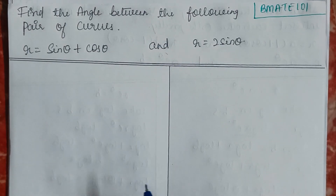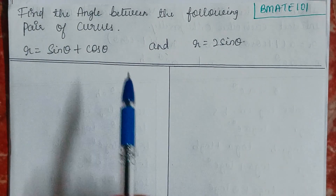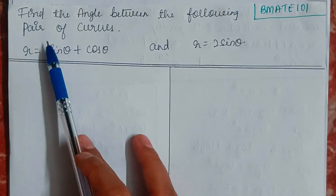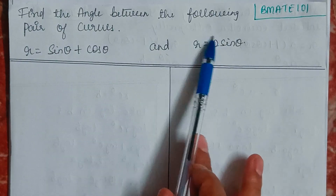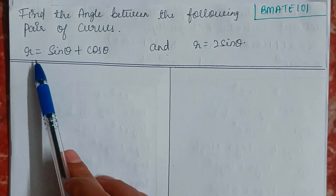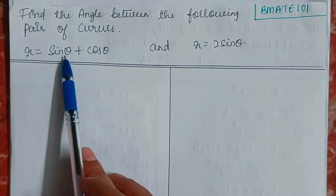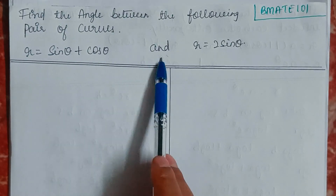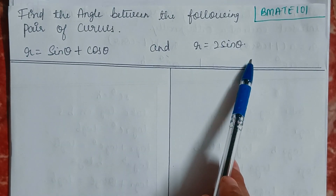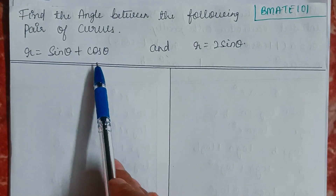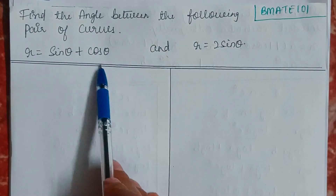Hello everyone, welcome back to my YouTube channel 'Learn with Sumi.' In this video we are going to learn how to find the angle between the following pair of curves. The curves are given as r = sinθ + cosθ and r = 2sinθ.